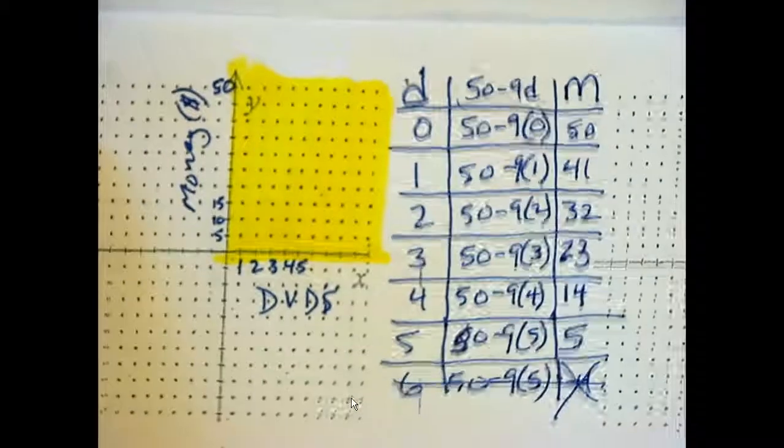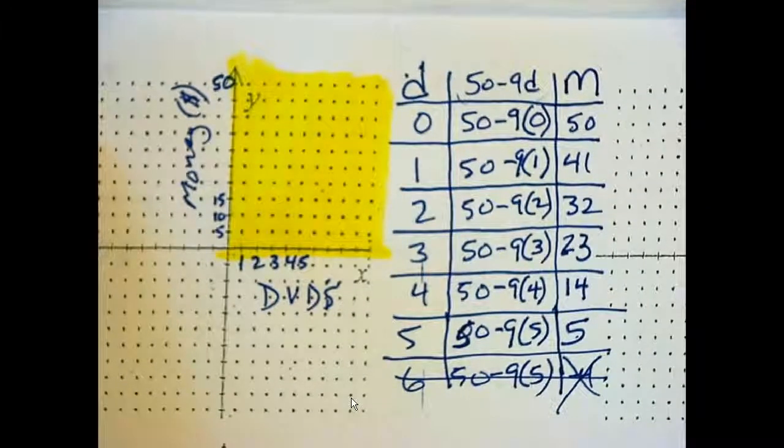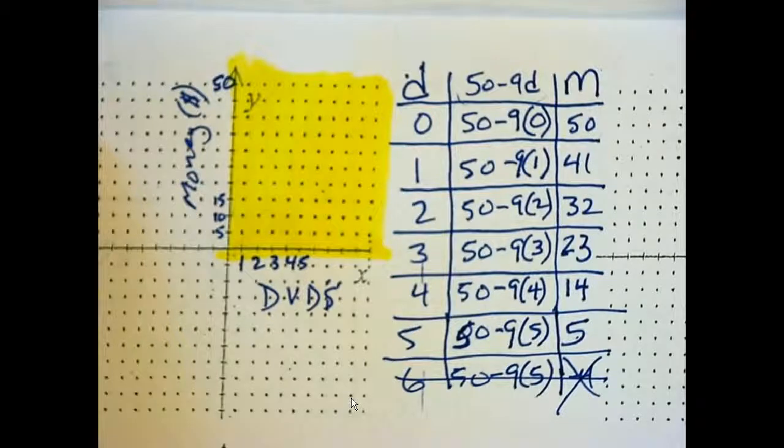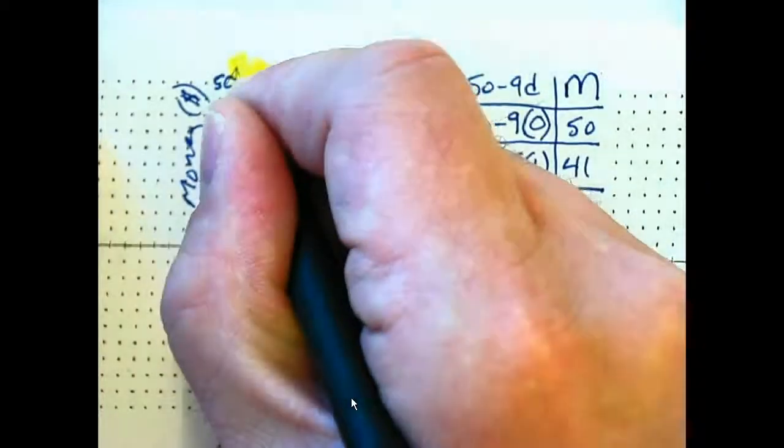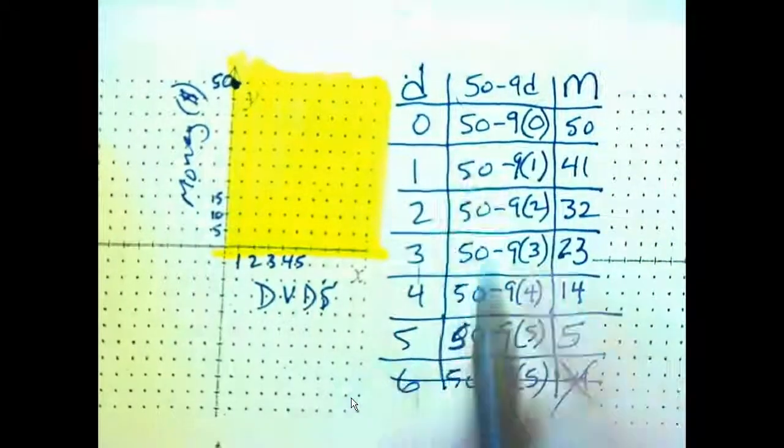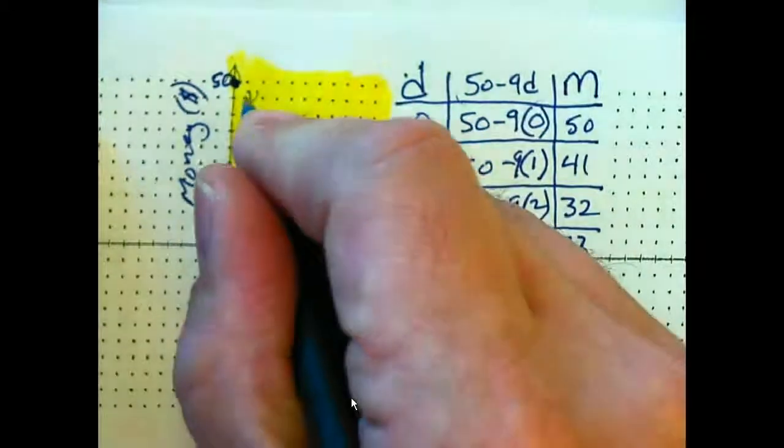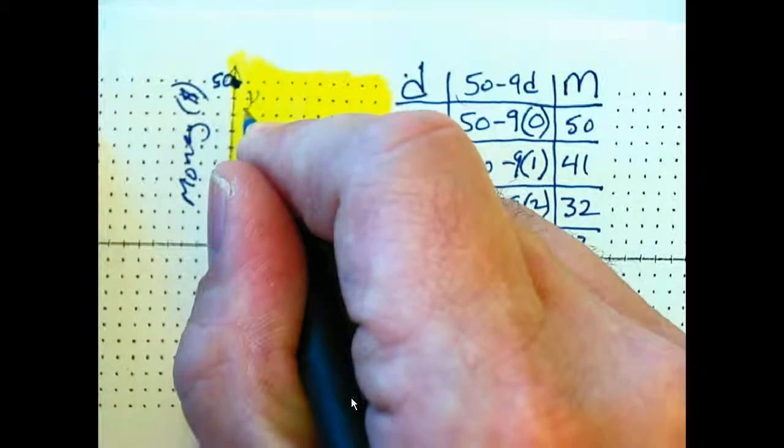Okay? Then we plot our points. You could. Yeah. If you want to go up by nines, you could. Okay? I'm going to go 0, 50. That puts me right there. And it's a dot.